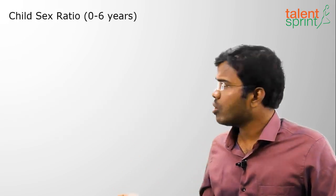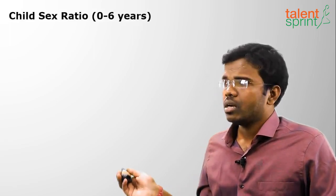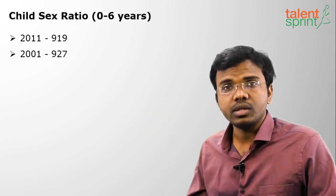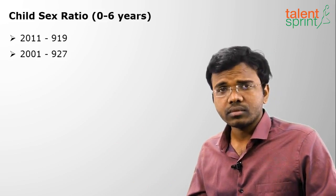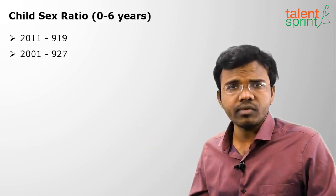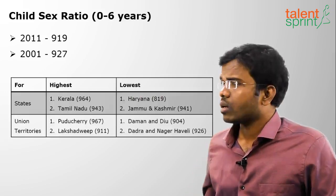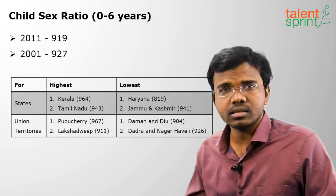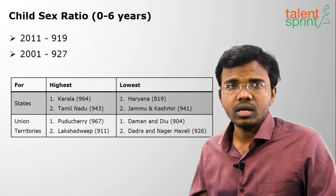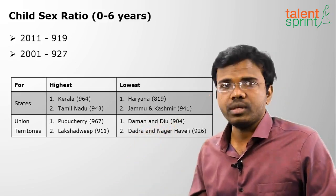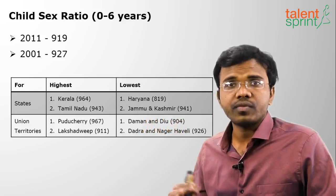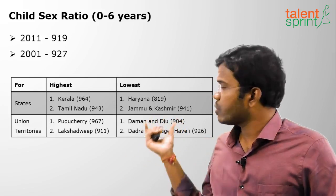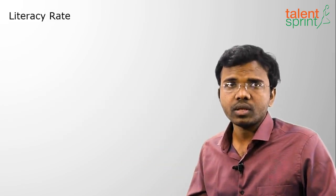Child sex ratio is the number of girls per thousand boys between ages zero to six years. In 2011 it was 919, while in 2001 it was 927 — a decrease, which is not a good sign, indicating preference for males. Kerala has the highest child sex ratio, followed by Tamil Nadu. Among UTs, Puducherry and Lakshadweep are highest. Haryana and Jammu and Kashmir have the lowest child sex ratios among states, and Daman and Diu and Dadra and Nagar Haveli are lowest among UTs.